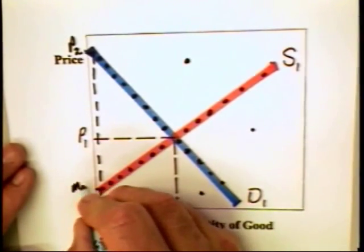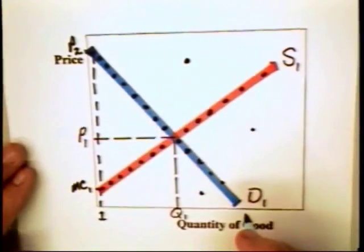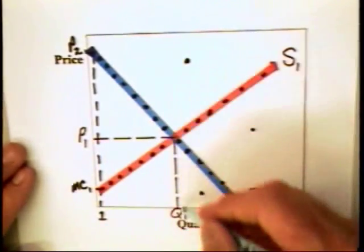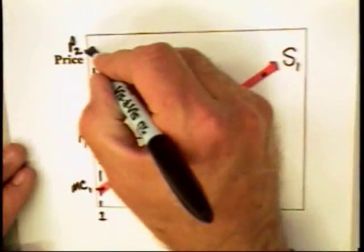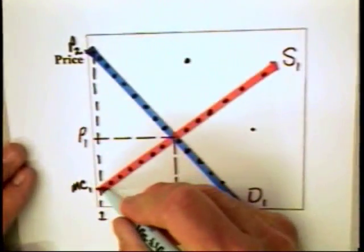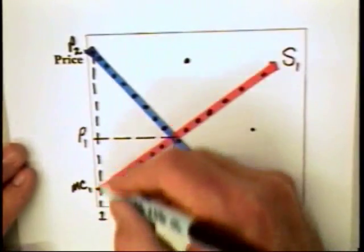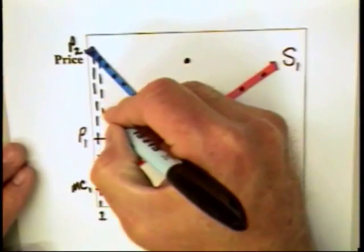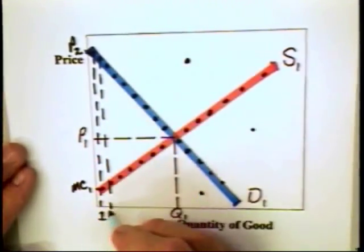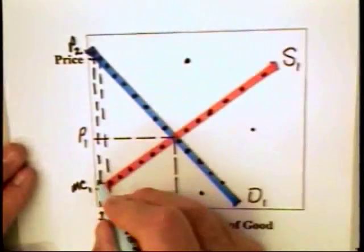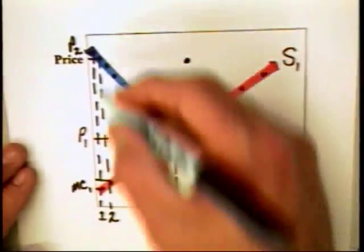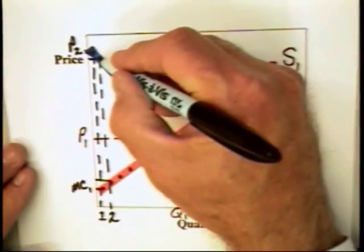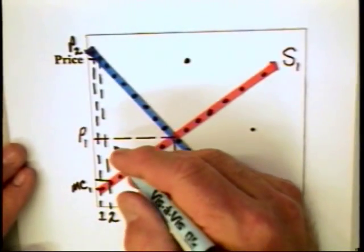The marginal cost of this first unit is way down here. That unit is produced given competitive markets produce all of Q1. The additional value is here, the additional cost is here. This gap between P2 and MC1 is the surplus value that is generated from the production and sale of this unit. The same is true of the second unit. The additional value is up here, the additional cost is a little higher, but still there is a gap between the marginal value and the marginal cost of production.